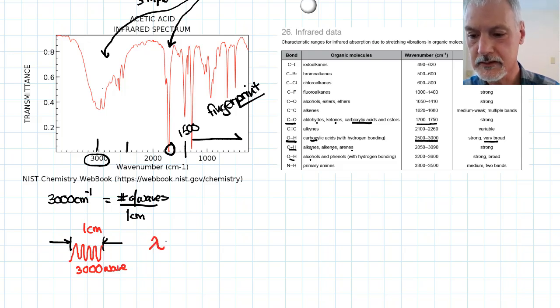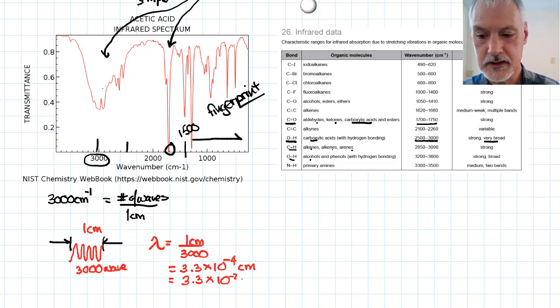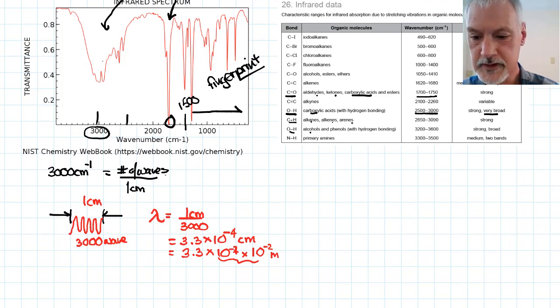That means that the wavelength of this infrared radiation, I could determine by going 1 centimeter divided by 3,000, so the wavelength would be like 3.3 times 10 to the minus 4 centimeters, which would be the same as 3.3 times 10 to the minus 4, times—now centi is 10 to the minus 2 meters. And I could put that all together. And that would be the same as 10 to the minus 6 meters.